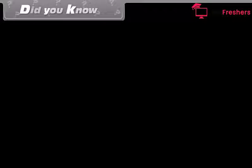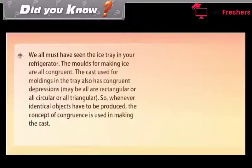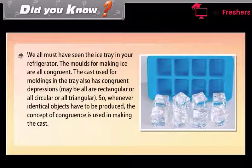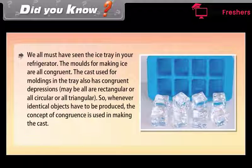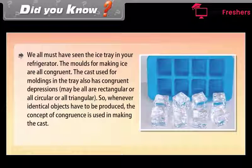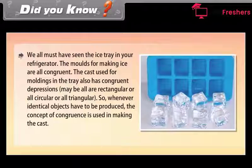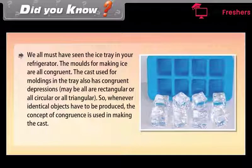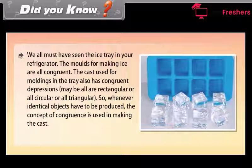Did you know — we must have seen the ice tray in a refrigerator. The molds for making ice are all congruent, with congruent depressions — maybe all rectangular, circular, or triangular. So whenever identical objects have to be produced, the concept of congruence is used in making the cast.